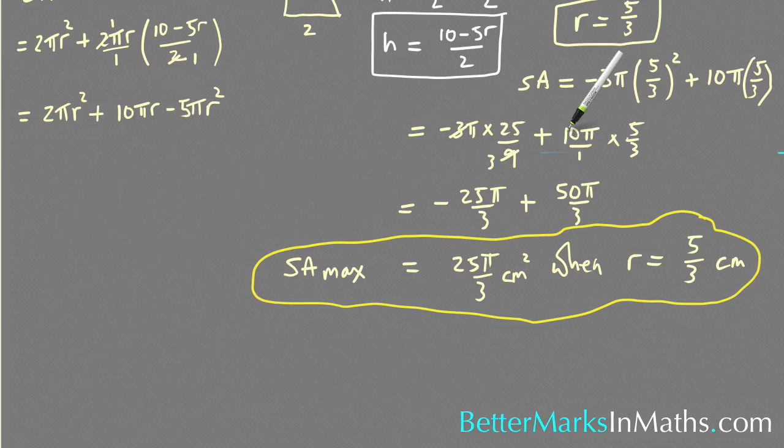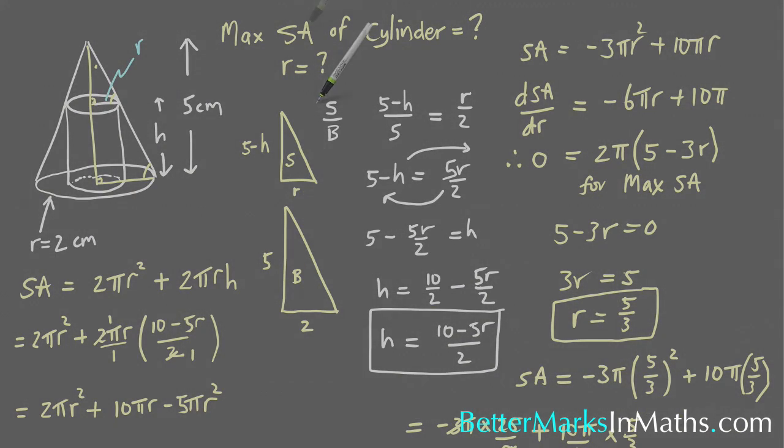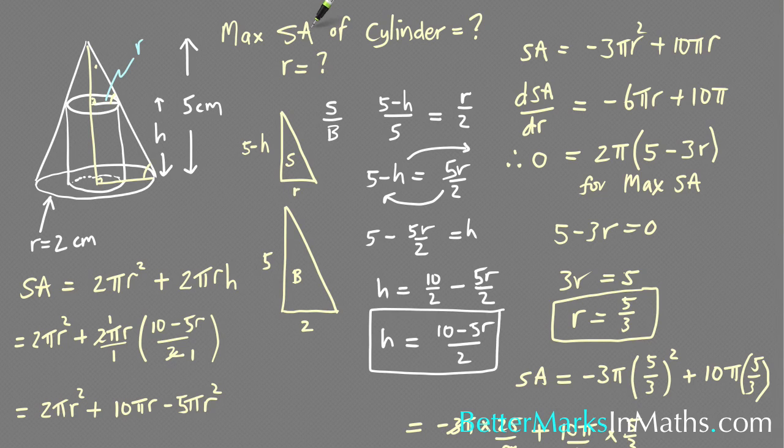So again with this type of question, making sure to start it you always focus on the thing you're trying to find, which in this case was the maximum surface area. So that meant I had to find the surface area first or an expression for it. Once I had that, realizing that there were two variables here and I needed to get one in terms of the other.